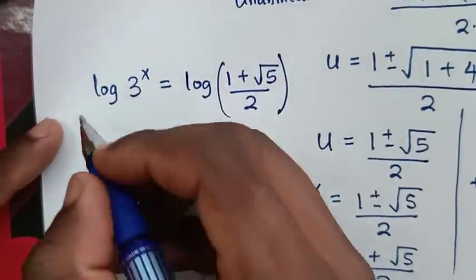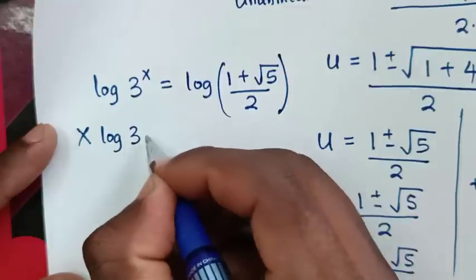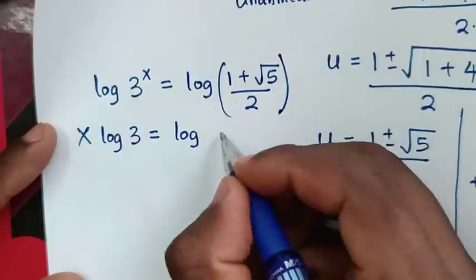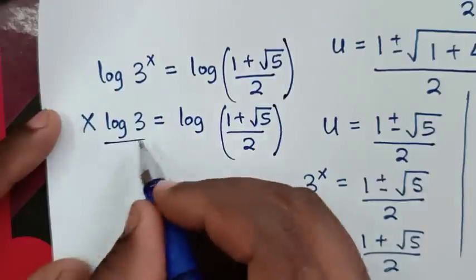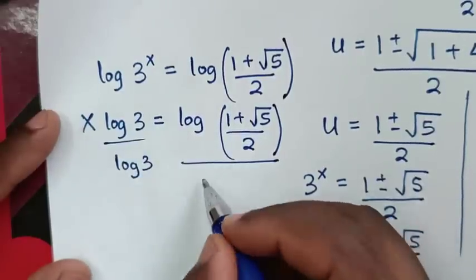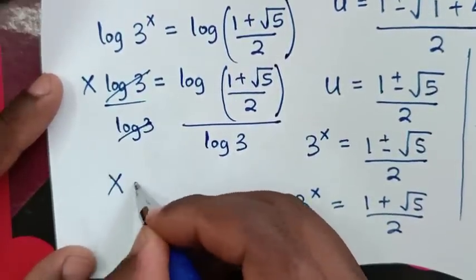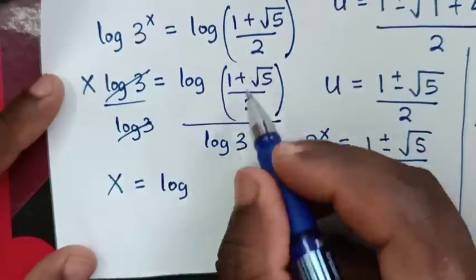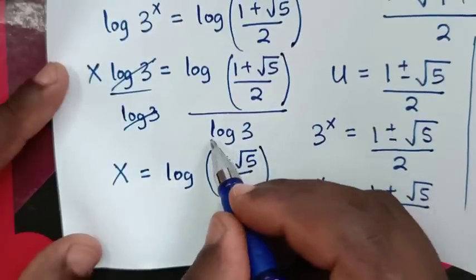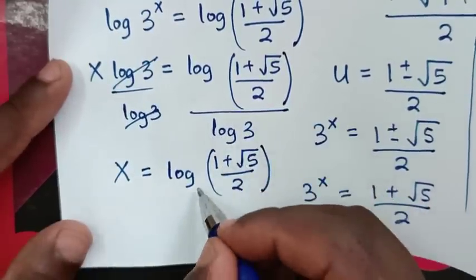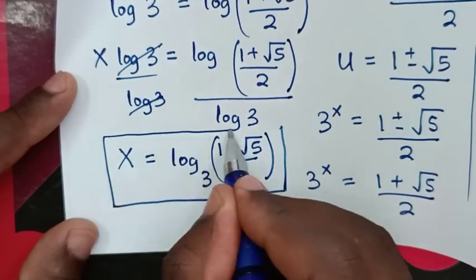We continue with 3^x equals (1 plus √5) over 2. Applying log to both sides: x times log(3) equals log((1 plus √5) over 2). Dividing both sides by log(3), the final answer is x equals log((1 plus √5) over 2) divided by log(3), which is the same as log base 3 of ((1 plus √5) over 2).